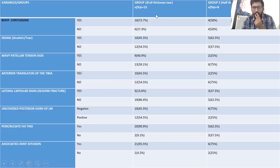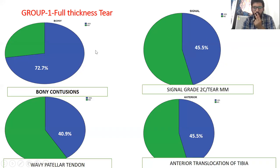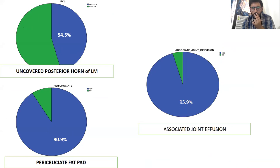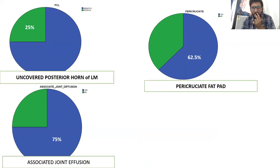In our study, among 22 patients with a full thickness tear: bony contusions were associated in 72.7%, signal in the medial meniscus in 45.5%, wavy patellar sign in 40.9%, anterior translation of tibia in 45.5%, lateral capsular sign in 13.6%, uncovered posterior horn of lateral meniscus in 45.5%, pericruciate fat pad hyperintensity in 90.9%, and associated joint effusion in 95.5%. Similarly, among 8 patients with partial thickness tear, bony contusions were associated in 72%, with variable amounts of the other secondary signs present, as illustrated in the pie charts.